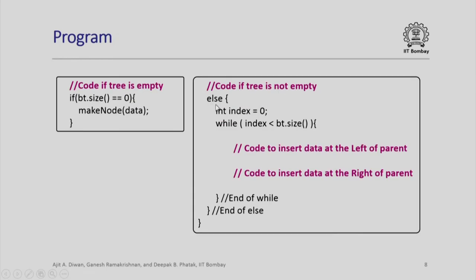Now let us look at the code we need to write if tree is not empty. If tree is not empty, then we come to the else part. Please note that if the size was 0, we would have created a node. If it is not 0, then we set index equal to 0 and walk through the tree, traverse through the tree as long as index is less than the current size.